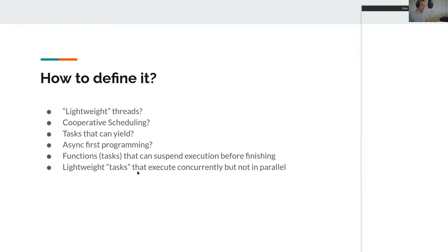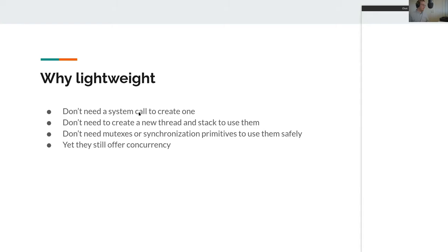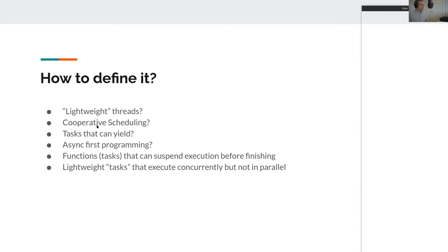Since they execute concurrently and not in parallel, you don't need mutexes or synchronization primitives to use them safely. They will not access data at the same time since they're not actually run at the same time, even if it feels that way. You can actually also implement your own coroutine system in any language — it's probably better when supported by the language, but since they're based on cooperative scheduling, you can create a simple coroutine system by writing your own cooperative scheduler.